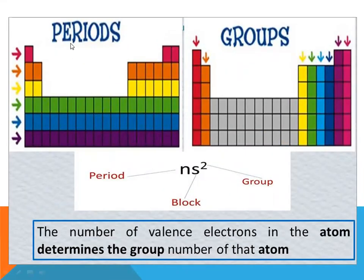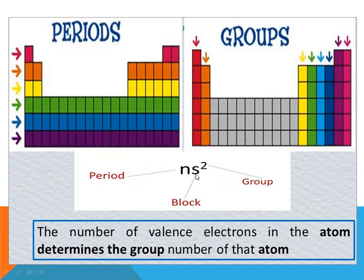Observe the diagram: horizontal rows are periods and vertical columns are groups. In the electronic configuration notation, the principal quantum number (n) gives the period number. The letter at the center — s, p, d, or f — indicates the block, written in small letters representing the four blocks. The superscript number of electrons determines the group number. Therefore, the number of valence electrons in an atom determines the group number of that atom.